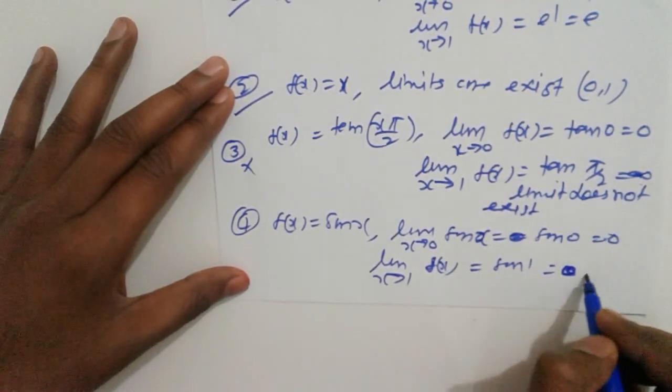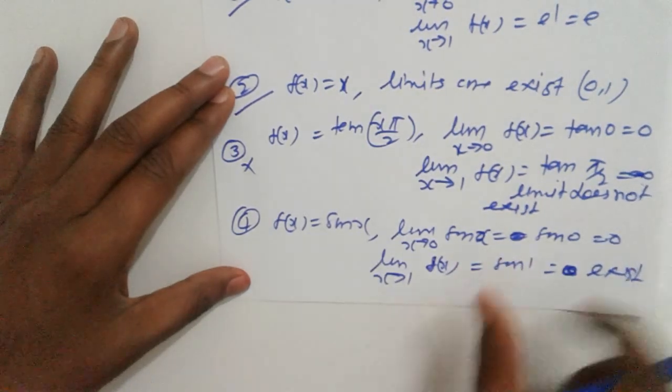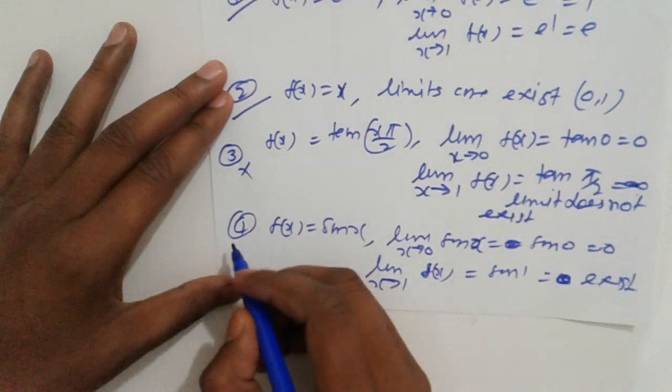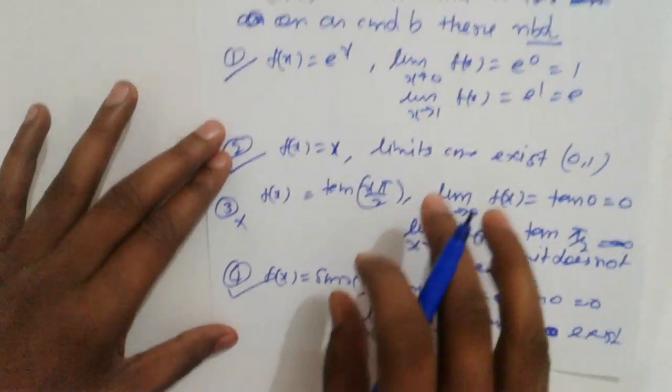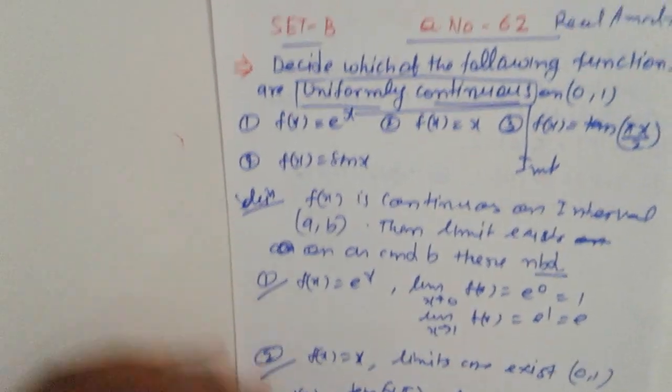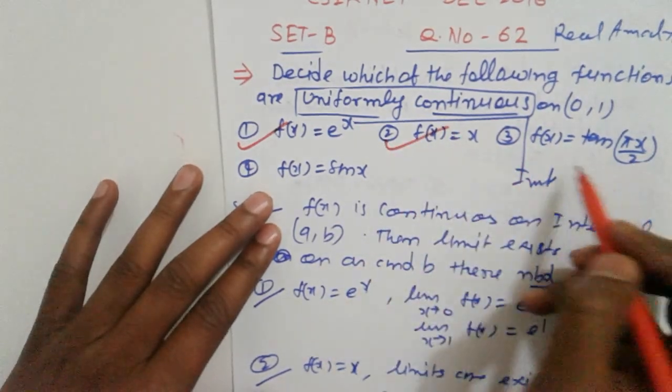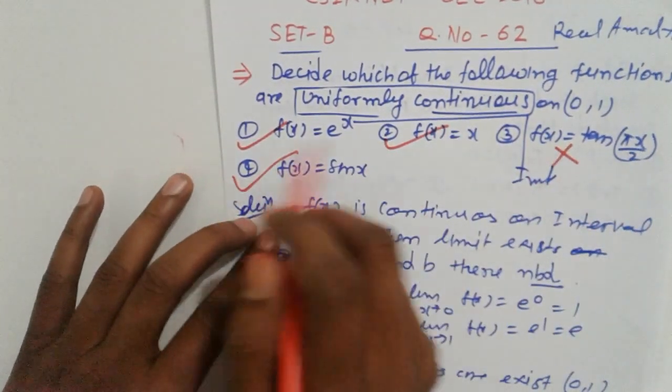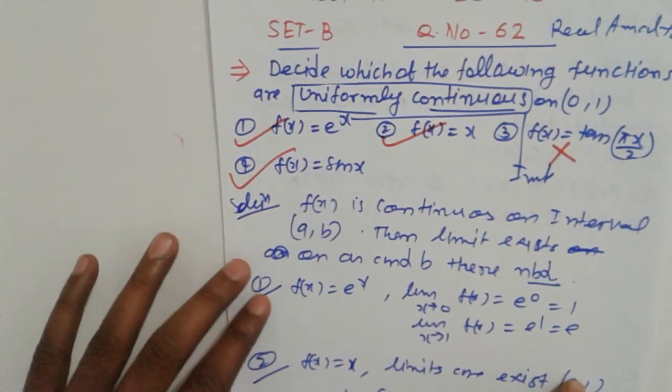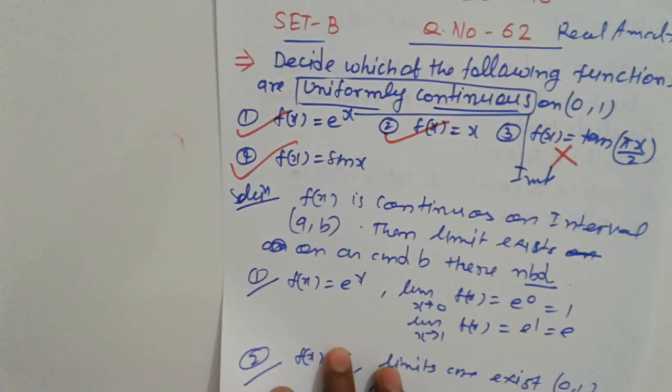Sin(1) also exists. Both point limits exist, so the fourth option is also correct. Which options are correct? First is correct, second is correct, third is wrong, fourth is correct. So all except the third option are uniformly continuous.